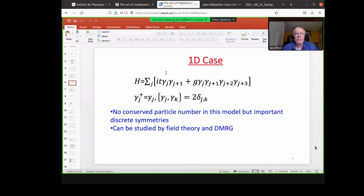So here's the one-dimensional model. So we have nearest neighbor hopping, gamma J, gamma J plus one. And we have shortest possible range interactions, gamma J, gamma J plus one, gamma J plus two, gamma J plus three. And of course, gamma J is a Majorana operator, so it's Hermitian. Gamma J dagger equals gamma J, and the anti-commutator is two delta JK. So there are no conserved particle number in the model, but important discrete symmetries and can be studied by field theory and by DMRG.